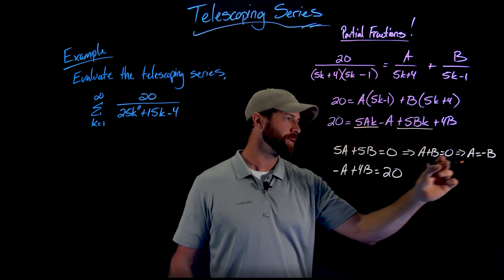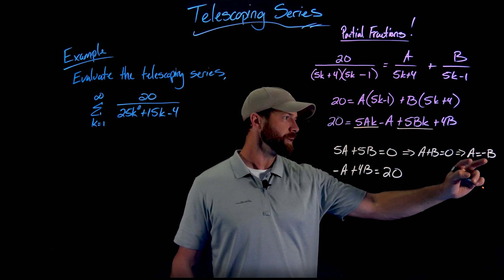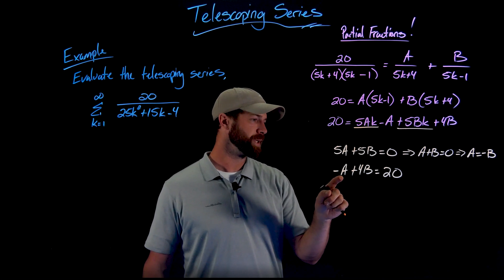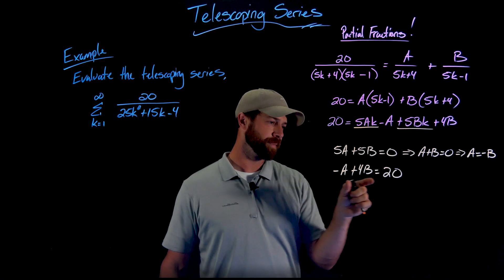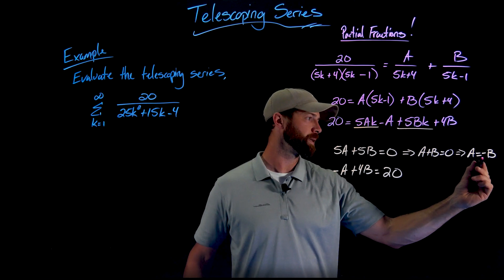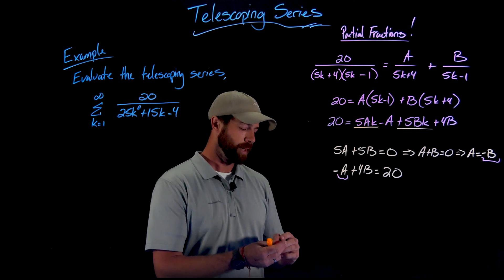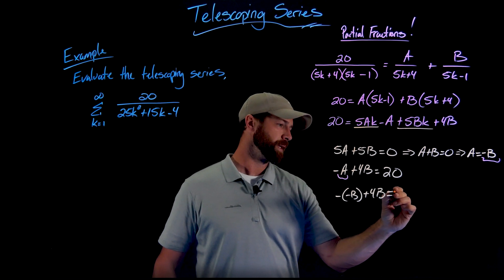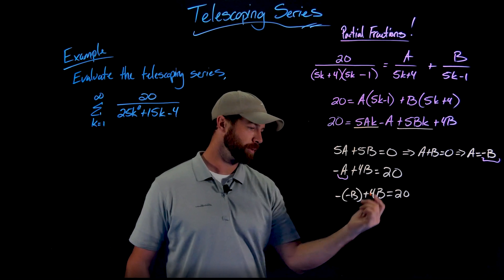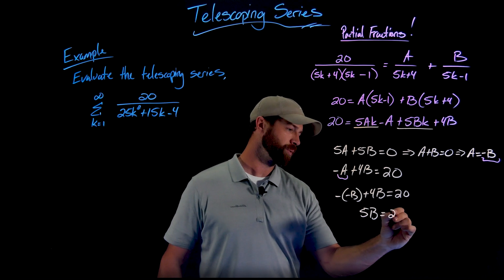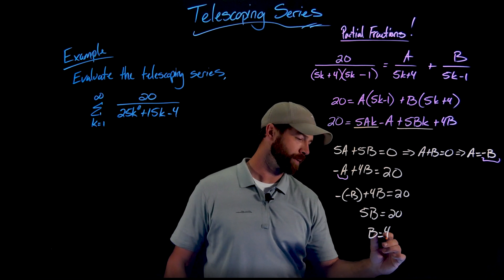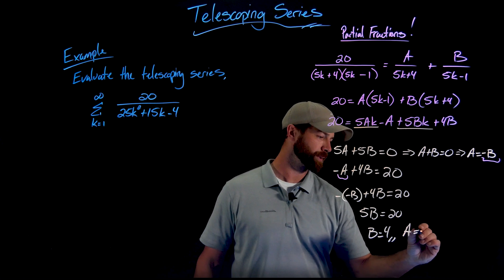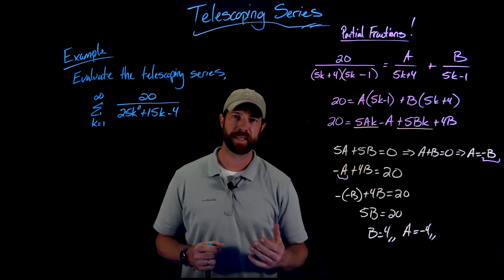Substituting a equals negative b into the second equation: negative negative b plus 4b equals 20, so b plus 4b gives 5b equals 20, meaning b equals 4. And since a equals negative b, a equals negative 4. With that information, I replace the original expression with its partial fraction decomposition, now written as two separate terms in the summation.